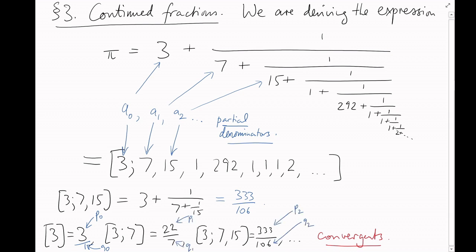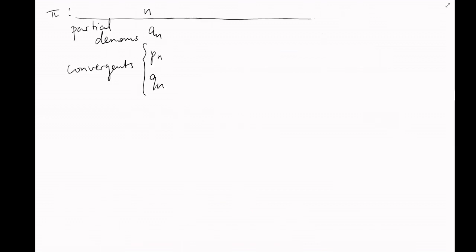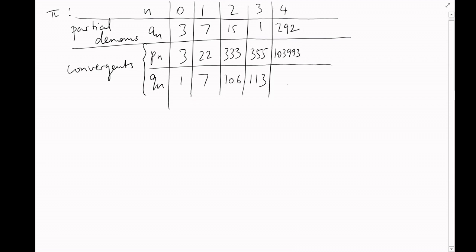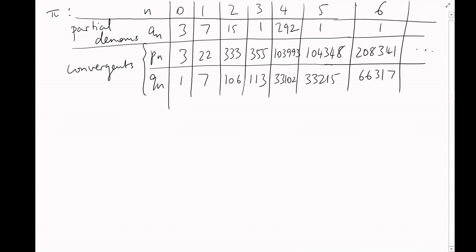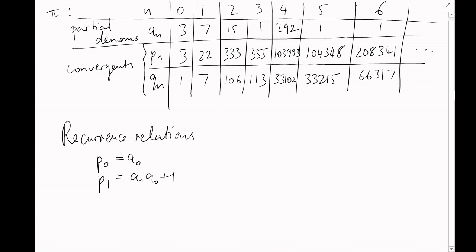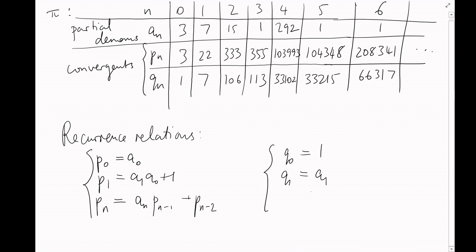It's often helpful to give convergents as a sequence of numerators and denominators pₙ and qₙ in their simplest form. If you followed the earlier method, you can write down recurrence relations: p₀ = a₀, p₁ = a₁a₀ + 1, and for n > 1, pₙ = aₙpₙ₋₁ + pₙ₋₂. Similarly, q₀ = 1, q₁ = a₁, and qₙ = aₙqₙ₋₁ + qₙ₋₂. This holds for any continued fraction.